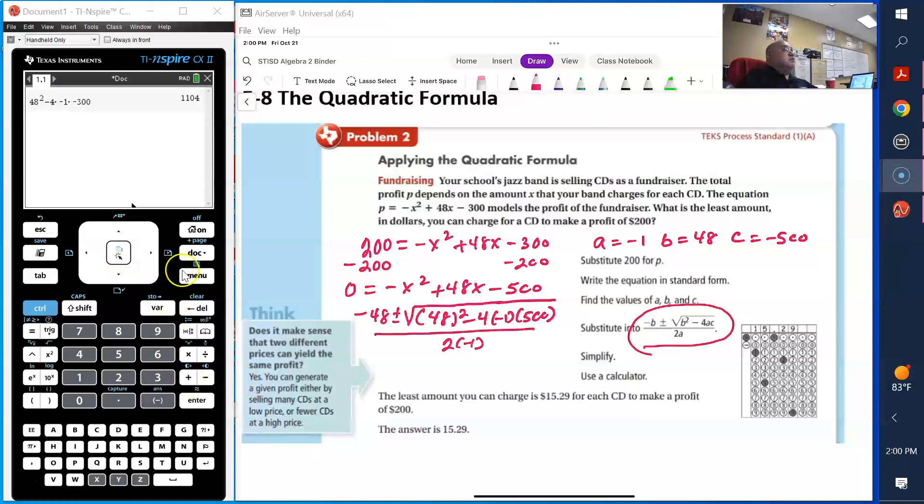Let's go ahead and type in the discriminant. So I have parentheses, 48 squared minus 4, parentheses, negative 1, close parentheses, parentheses, negative 500. And you notice I forgot the negative there, but you need to write the negative 500 there.